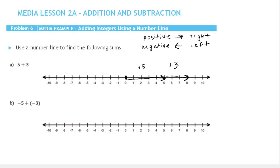Notice the end result, or the sum, is where we end up when we take these two combined amounts, which is at positive 8. So 5 plus 3 equals 8.